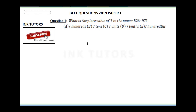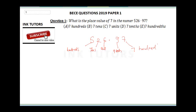Question one: What is the place value of 7 in the number 526.97? So we have 526.97. The digit 5 is in the hundreds, 2 is in the tens, 6 is in the units. After the decimal point, 9 is in the tenths position, and 7 is in the hundredths position. So the place value of 7 is 1/100, and the final answer is E.